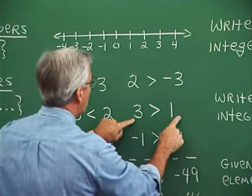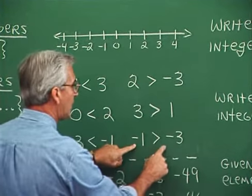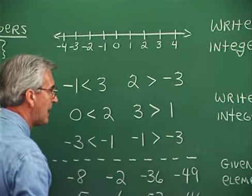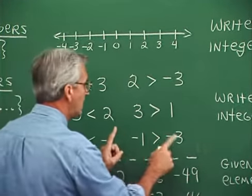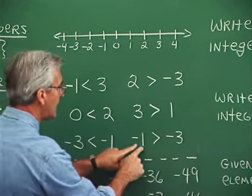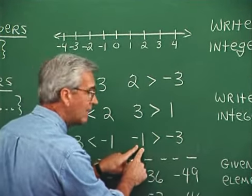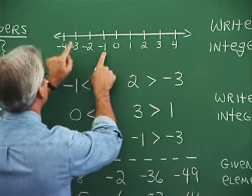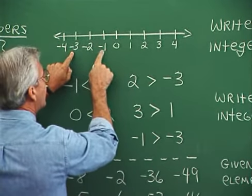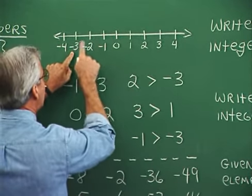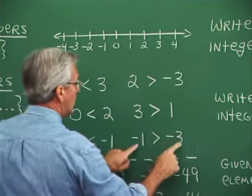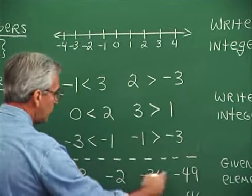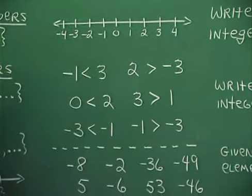Three is greater than one. Negative one is greater than negative three — here's that situation with two negative numbers where we have to be careful. Think about where the numbers lie on the number line: negative one lies to the right of negative three, so negative one is greater than negative three. So we write 'greater than.' Let's put the proper symbol into these pairs of numbers.